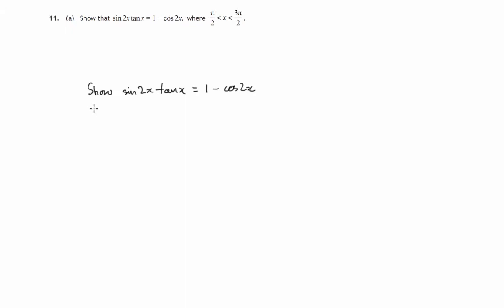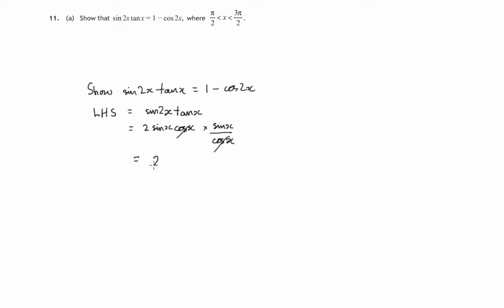Let's start with the left hand side of this identity. What can we do with sin 2x times tan x? Well, we know there's a double angle formula: sin 2x is the same as twice sin x times cos x. We also know that tan x can be written as sin x over cos x. The cos x terms cancel, leaving us with 2 times sin x times sin x — that's 2 sin squared x.